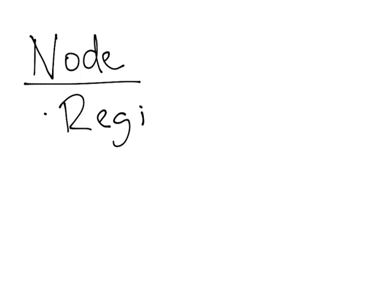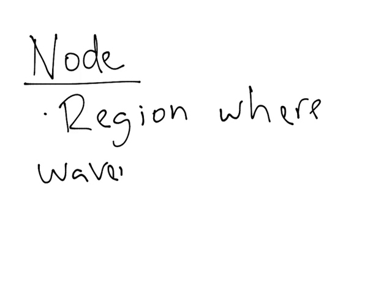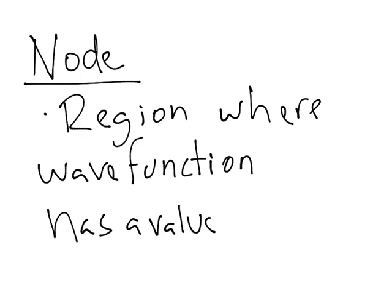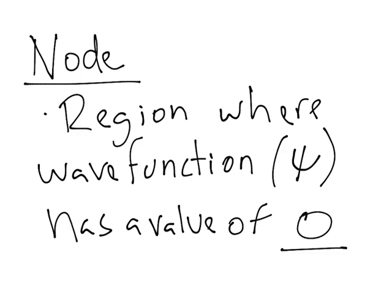In this video, I'll be talking about nodes and the two different nodes that could occur in a specific orbital. Let's define a node, what a node is first. A node is basically a region where the wave function has a value of zero. The wave function is usually represented with the symbol psi. It's like a trident, pretty much. So, a region where the wave function has a value of zero, that's a node.